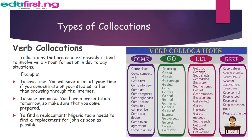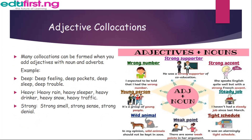Another example is 'to come prepared': you have a presentation tomorrow, so make sure that you come prepared. The collocation in this sentence is 'come prepared.' Another one is 'to find a replacement': the Nigeria team needs to find a replacement for John as soon as possible. The collocation here is 'find a replacement.'